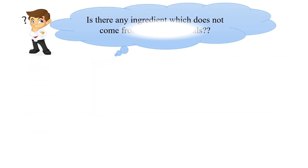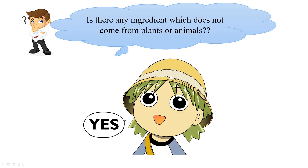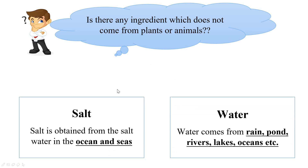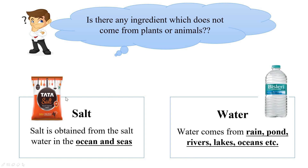Till now we have been talking about plants and animals as major sources of ingredients. But is there any ingredient which does not come from plants or animals? The answer is yes — the examples are salt and water. Both salt and water are natural resources and they neither come from plants nor animals. Salt is obtained from oceans and seas, and water is obtained from rain, ponds, rivers, lakes, oceans, etc.